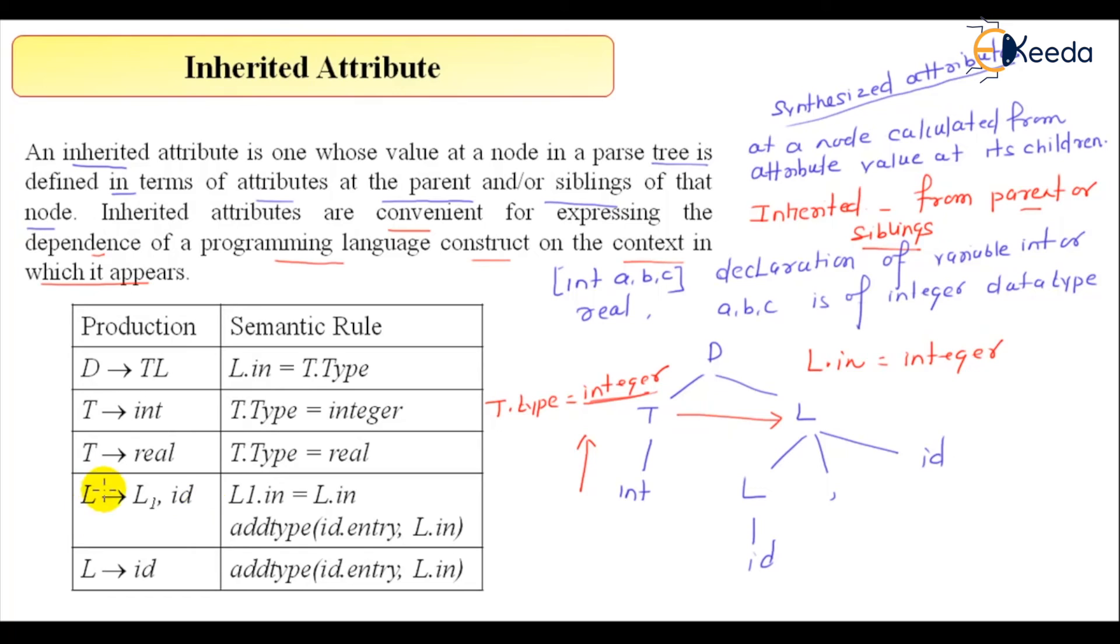Here L dot in, L dot in is equal to T dot type and that type is nothing but integer, so that will become integer. Now, L and L one, just concentrate on this. L is on the left hand side, L one is on the right hand side and here now this value will be propagated in this way. This is L and this is your L one. Now see here L one dot in, this value, L one dot in is equal to L dot in. So L one dot in, at this place, L one dot in will also become L dot in and that is nothing but integer.